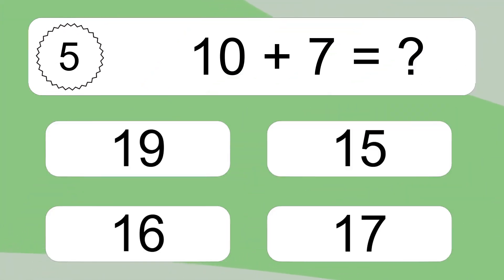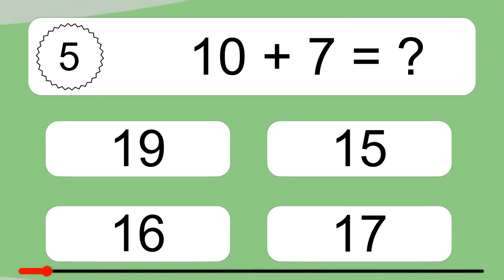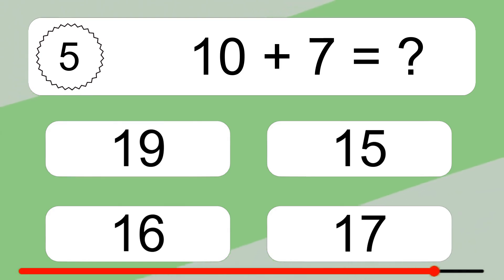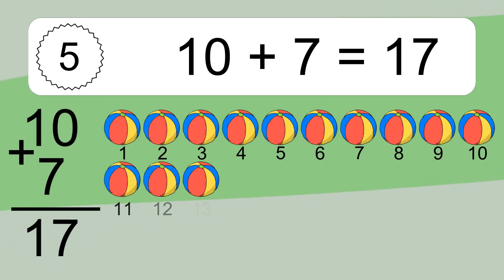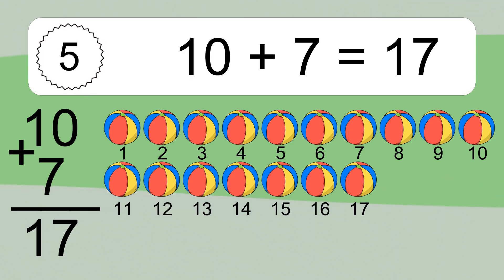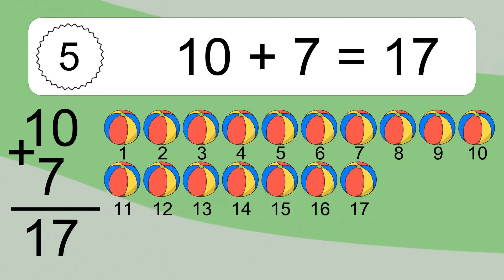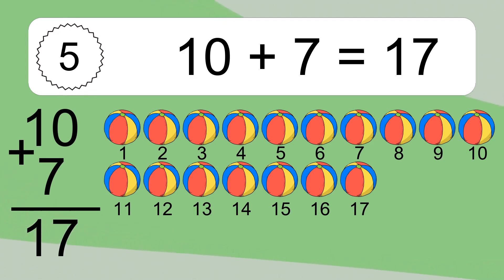10 plus 7 equals what? 10 plus 7 equals 17. Let's count it: 1, 2, 3, 4, 5, 6, 7, 8, 9, 10, 11, 12, 13, 14, 15, 16, 17.